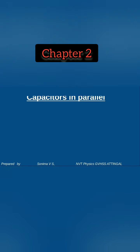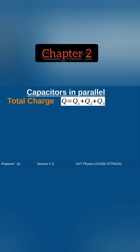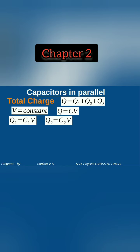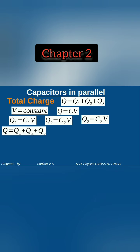Total charge Q is equal to Q1 plus Q2 plus Q3. Since V is constant, Q1 can be written as C1 times V, Q2 can be written as C2 times V, and Q3 can be written as C3 times V. The total charge Q is the sum Q1 plus Q2 plus Q3.